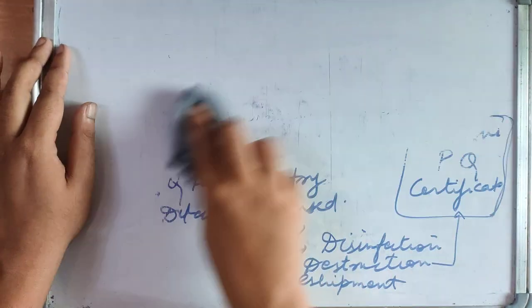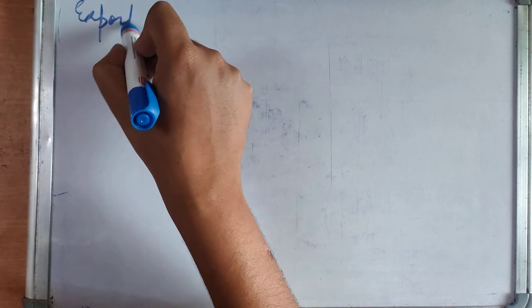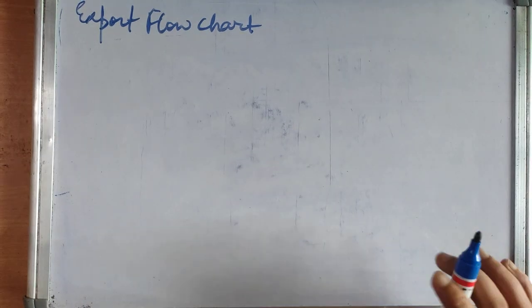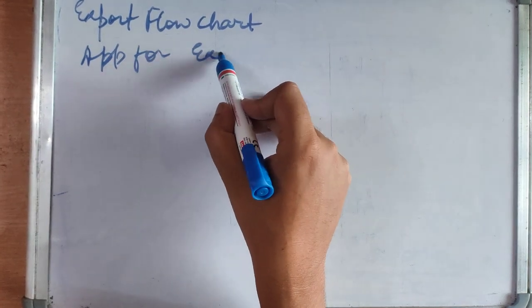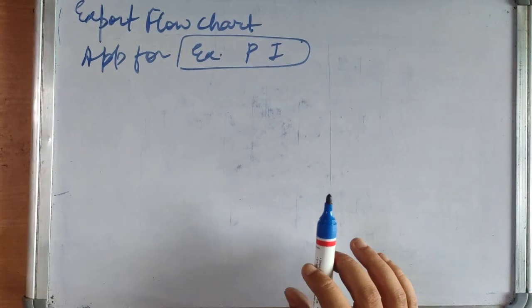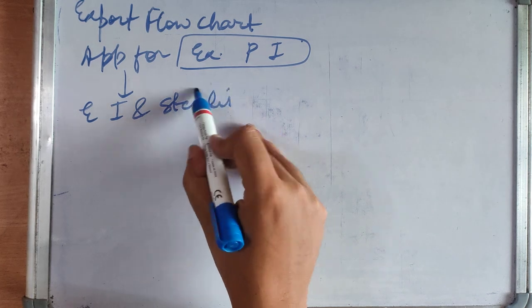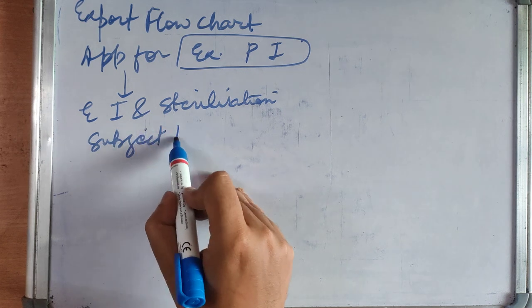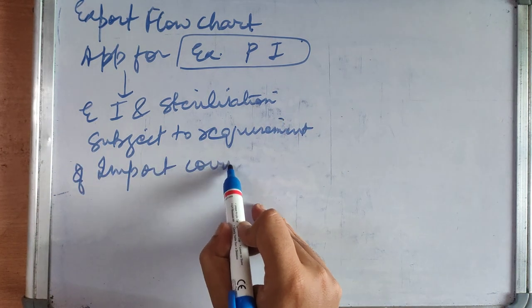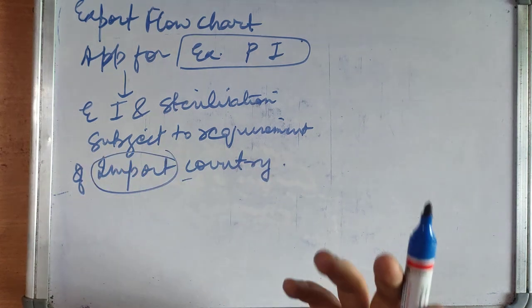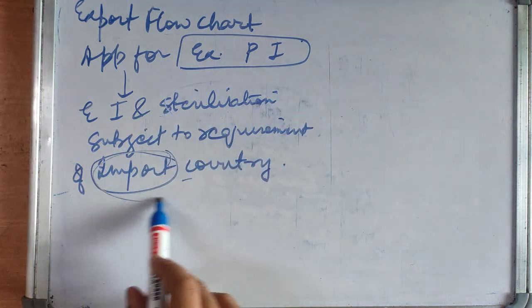Now we will see the export flow chart — how can we export agriculture products. First we file an application for export plant inspection. Then export inspection and sterilization takes place, subject to the requirement of the import country. For example, if we are exporting to the USA, it will have some requirements about the level of disease or pest, and we will sterilize as per its requirements.